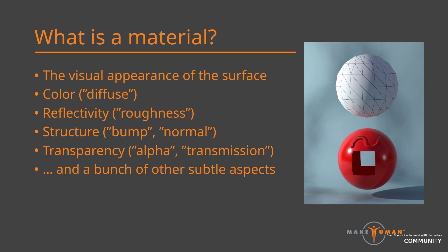The color is what you will normally first focus on when giving an object its appearance. In 3D lingo you will sometimes also hear the term diffuse — there is a bit more to it, but if you hear the term diffuse you can think color. The next natural part is how reflective the surface is, which largely stems from the roughness of the surface. Consider the difference between a polished marble floor and a bare concrete floor: the marble is smooth so you can see light reflected on it, while the concrete is rough so you will not see any reflections.